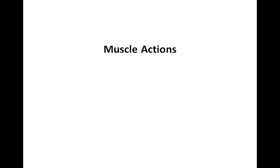We now take our discussions to the muscular system. Muscle actions describe the type of movement that will occur when a muscle contracts. The muscle action occurs due to contractions of the muscle pulling on the bone by way of the attached tendons, causing the bone to move. Muscle actions are generally viewed as pairs in which one action is the opposing action of the other.